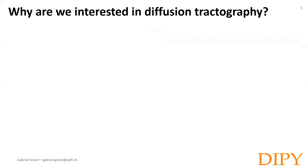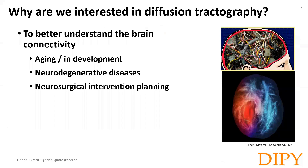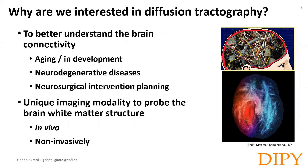Why are we interested in diffusion tractography? For one, it is to better understand the brain connectivity — for instance, to follow changes during aging and development or during the progression of neurodegenerative diseases. Tractography has also been shown to be useful in neurosurgical planning to identify which fiber bundle might or might not be affected by a tumor. Diffusion MRI tractography offers a unique imaging modality to probe the brain's white matter in vivo and non-invasively.